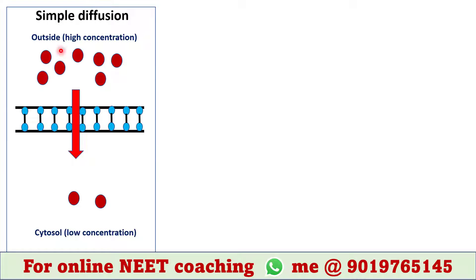Simple diffusion is a very simple process where a particular substance passes through the biological membrane from a high concentration area to a low concentration area. In this picture we can see this molecule has higher concentration in the extracellular space, and its concentration is lower in the cytosol. A clear concentration gradient is formed when there is a concentration difference.